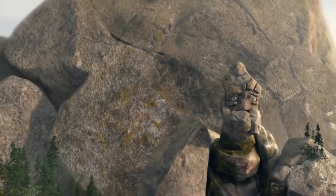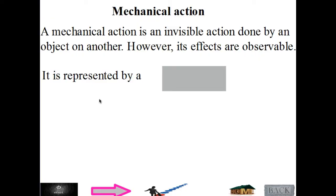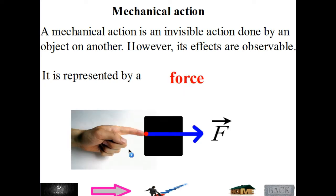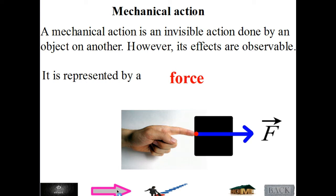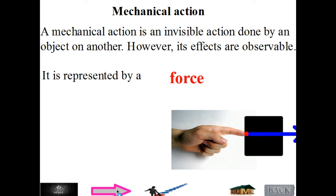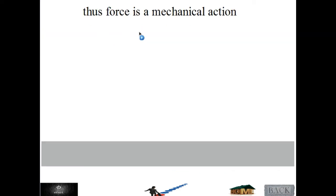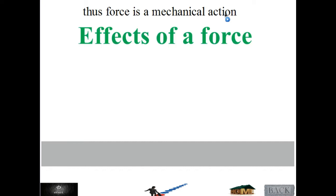Mechanical action can be represented by a force. This hand applied a force on the box, then the box will move. So we cannot say that the finger did mechanical action to the box unless we see the effect of this mechanical action after the box moves. So now we know that we are doing a mechanical action. Thus, force is a mechanical action.